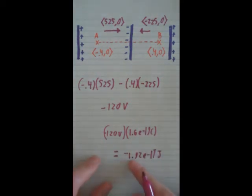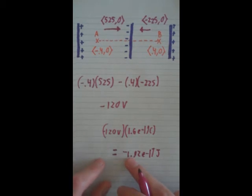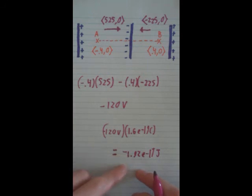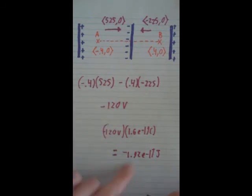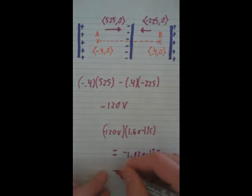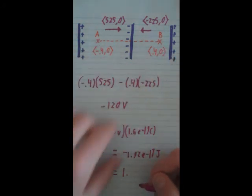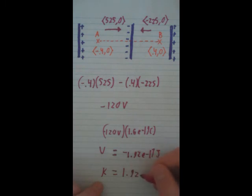Since there's going to be that much of a potential, then that means that that drop needs to turn into some type of other energy, which means the drop of potential is going to become the kinetic energy. So, this is U and this is K. The kinetic energy, when from A, when it reaches B, is 1.92 e to the negative 17th joules.